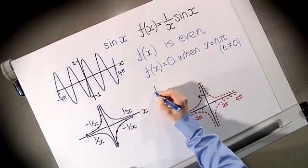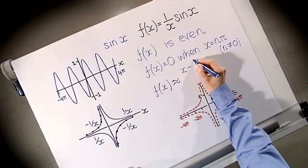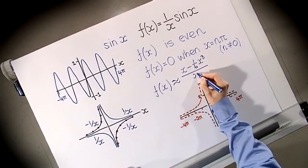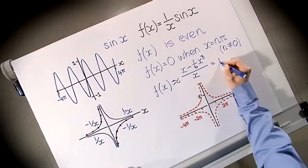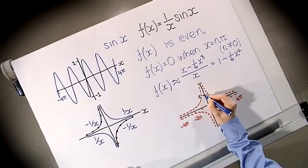Even though the function is not defined at x = 0, it is defined for x near zero, and we can use the Taylor series for sin(x) to see what happens near x = 0. Using the Taylor series, sin(x)/x = (x - x³/6 + ...)/x = 1 - x²/6. So when x is small, the function is roughly 1 - x²/6, and we can draw that part of the curve.